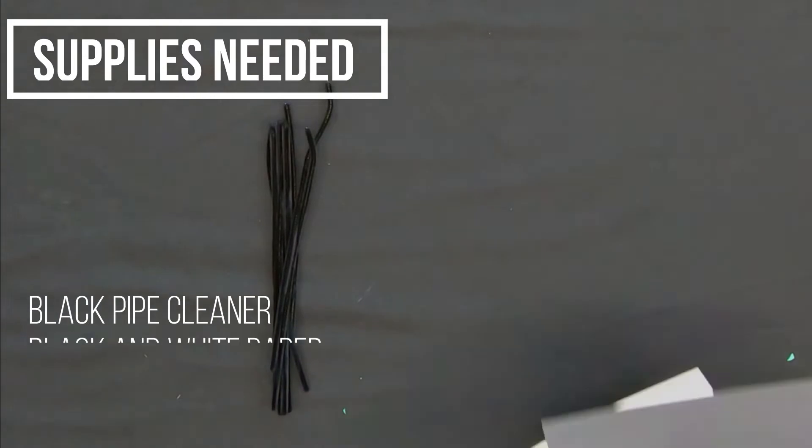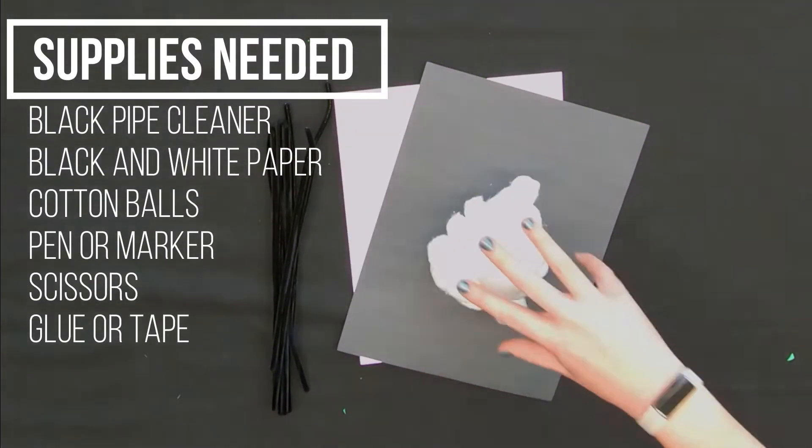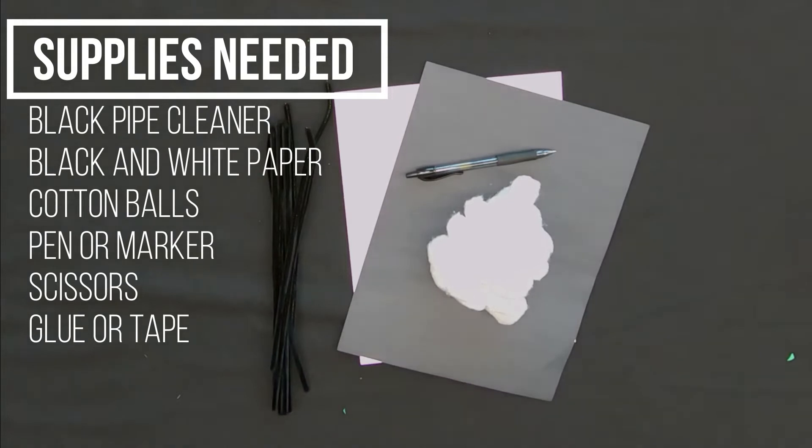Now let's get into the craft. This week, we'll be making a sheep using cotton balls, pipe cleaner, and you'll also need black and white paper, a pen or a marker, scissors, tape or glue.